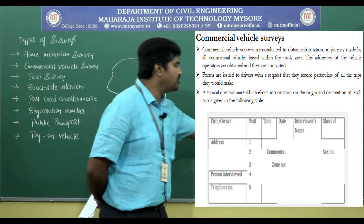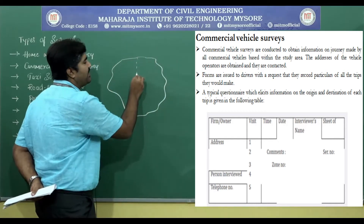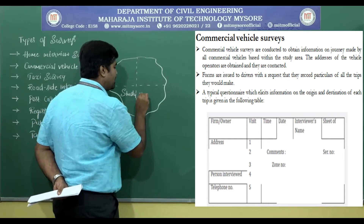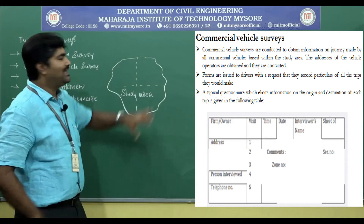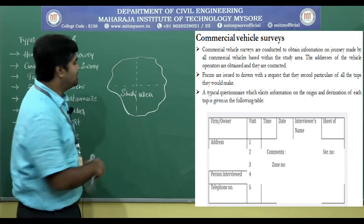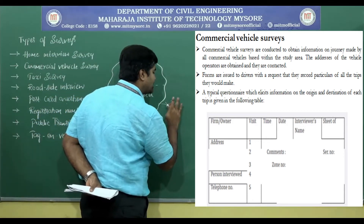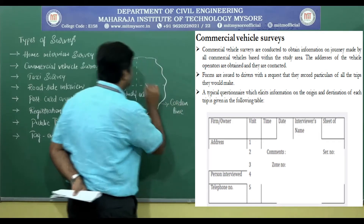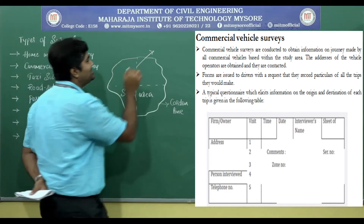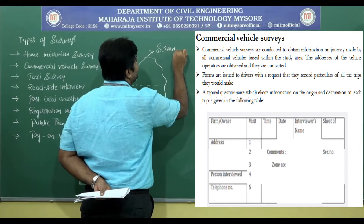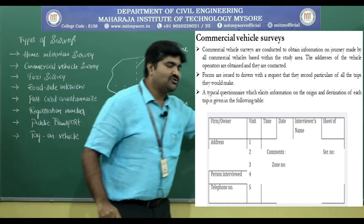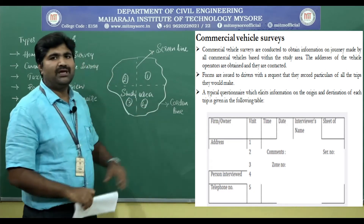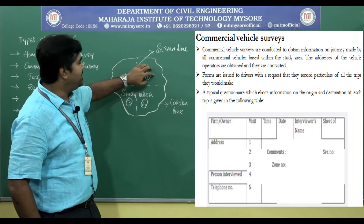For which zone the vehicle belongs, the zone number should be written. In this study, the study area will be divided into a number of zones. For Mysore, as discussed in the previous session, the ring road is taken as the cordon line — the boundary for the study area. This continuous line is the boundary line, called the cordon line or external cordon line. The dotted line, which is the boundary of a zone, is called the screen line.